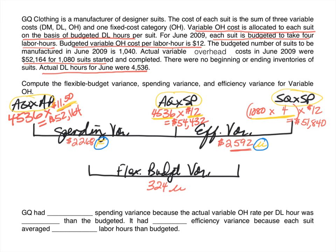GQ had a favorable spending variance because the actual variable overhead rate per direct labor hour ($11.50) was less than the budgeted rate ($12). It had an unfavorable efficiency variance because each suit on average required more direct labor hours than budgeted.